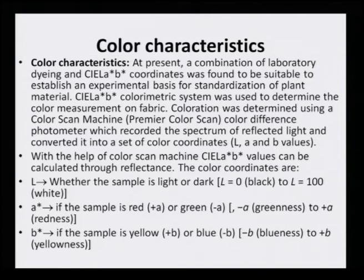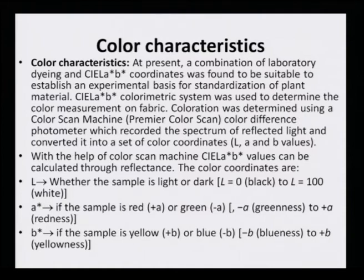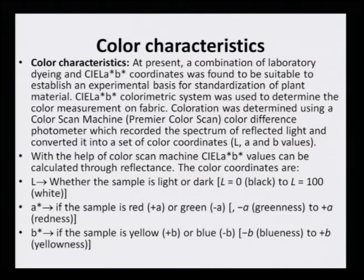The color coordinates are: L — whether the sample is light or dark (L=0 is black, L=100 is white); the lower the value of L, the darker the shade and the higher the value of L, the lighter the shade. Similarly, if the sample is red or green — plus A shows redness, minus A shows greenness. For B*, plus B values represent more yellowness, minus B represents blueness. These are all numerical values.